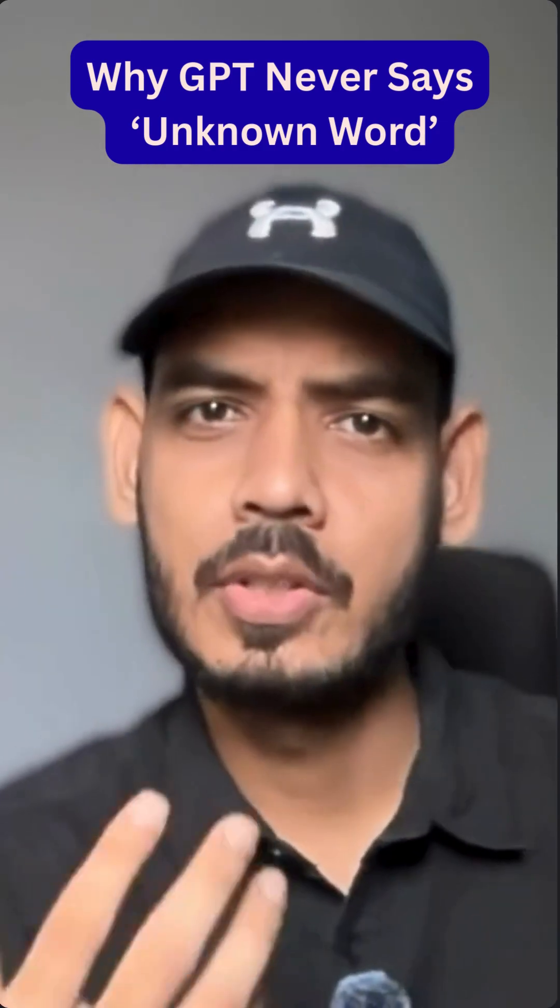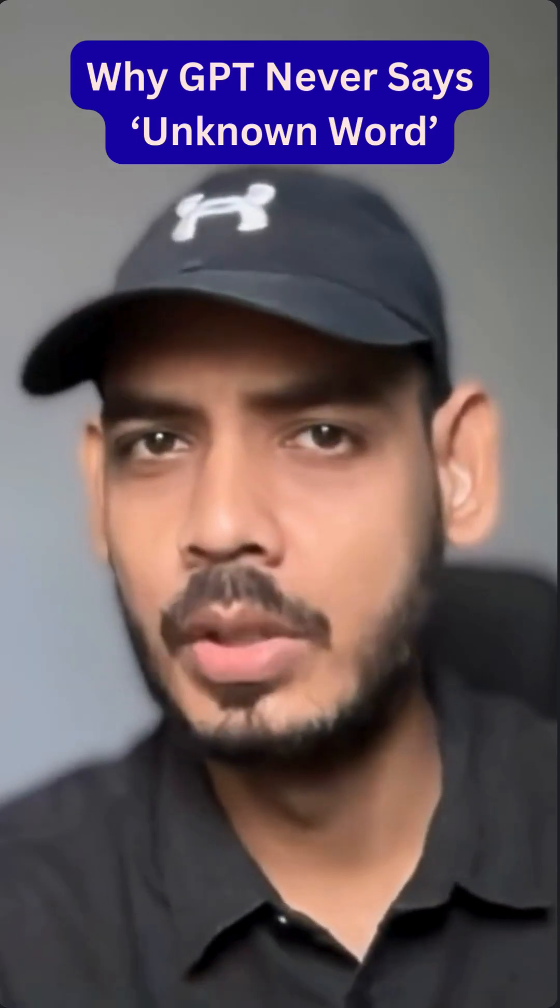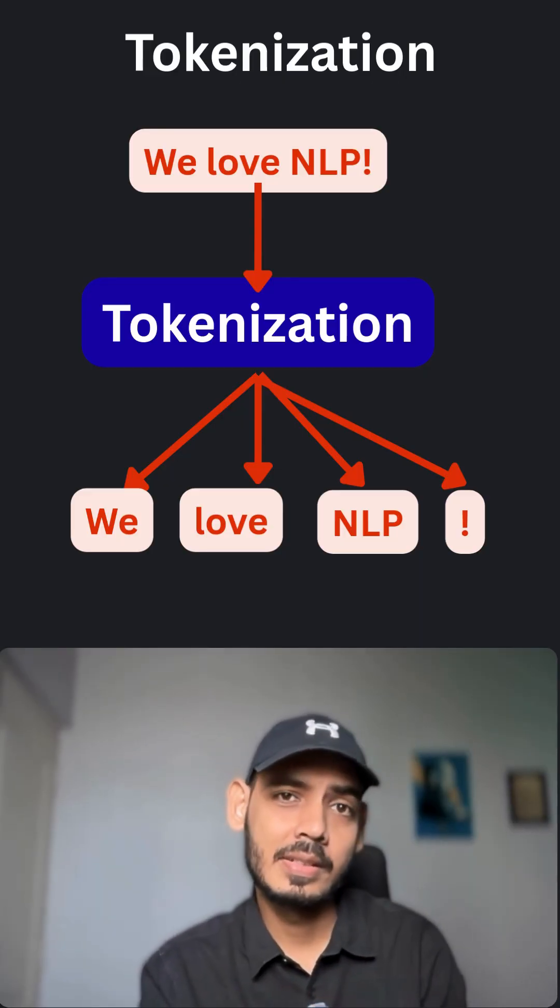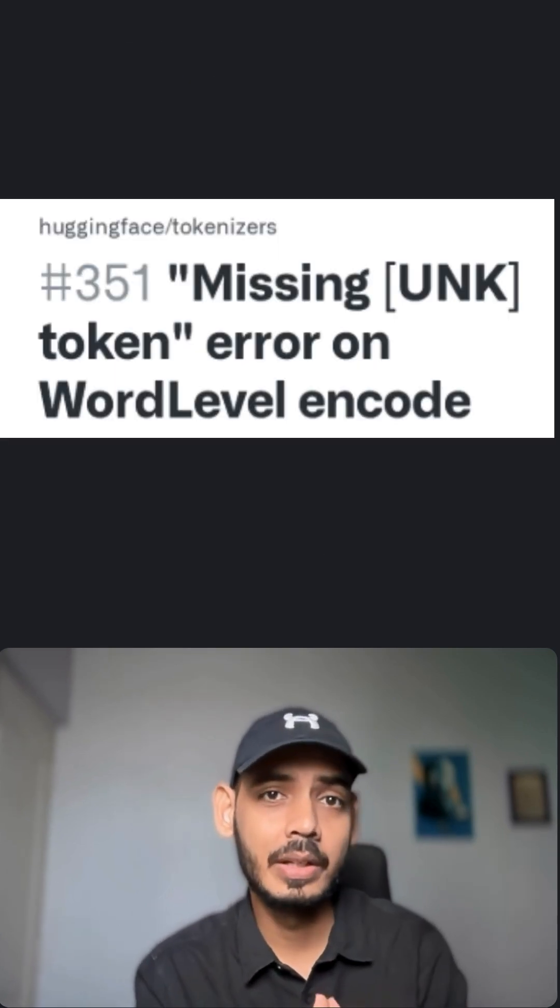Have you ever noticed when you talk with a chatbot like ChatGPT, it never says an unknown word? The reason behind this is simple: tokenizers break your text into words and fail immediately when they find an unknown word.